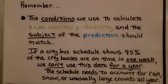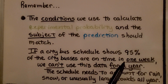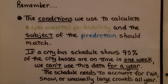If a city bus schedule shows 95% of city buses are on time in one week, we can't use this data for a year. The schedule needs to account for rain, snow, or unusually large crowds all year. This was just for one week, so we can't use one week of data for an entire year — it should be a week for a week. Similarly, we can't use data on t-shirt sales to predict pants sales.